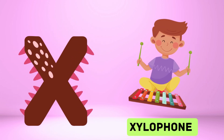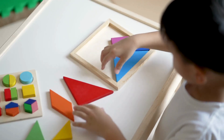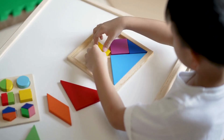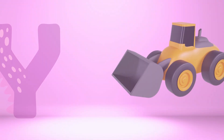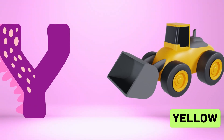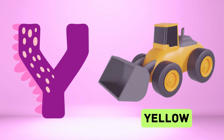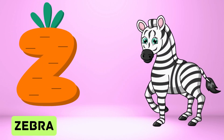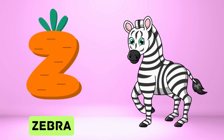X is for xylophone, z-z-xylophone. Y is for yellow, ye-ye-yellow. Z is for zebra, z-z-zebra.